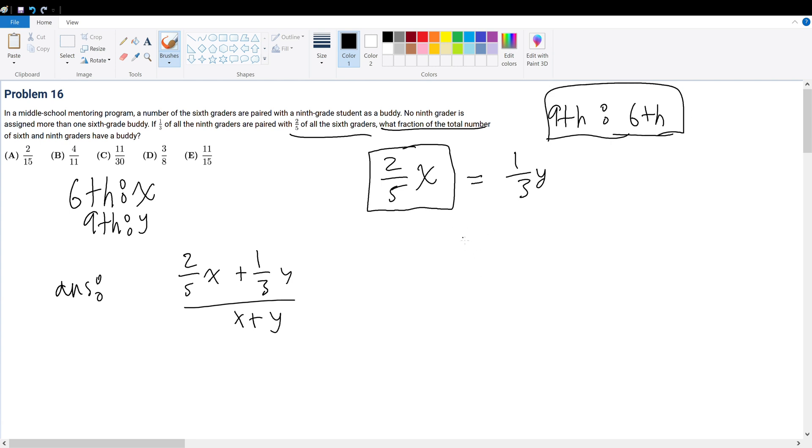So now we can solve it, right? y is equal to 6/5x. So this becomes 2/5x plus 1/3 times 6/5x. This is all divided by x + 6/5x. Now, x and x gets all cancelled because everything has a term x. So what we can do is we can factor out x and then divide it out from the fraction.